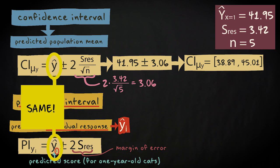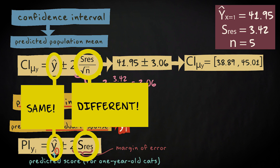The predicted response value for a one year old cat is the same whether you predict a mean score or an individual score. You can see that the only real difference between the two formulas lies in the standard error, which reflects the precision of our estimation of the predicted score.